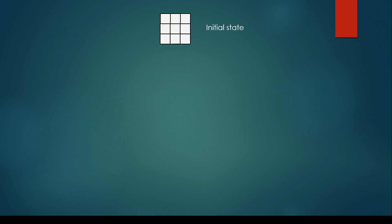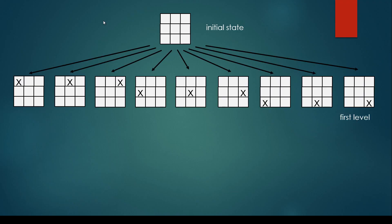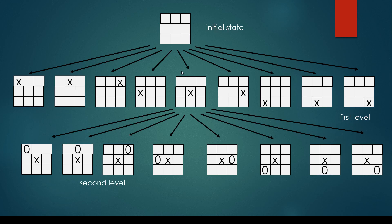For tic-tac-toe, we have the initial state: a 3x3 grid with 2 players denoted by X and O. At the beginning, the board is empty. We construct this tree-like structure on a layer-by-layer basis. The first player is able to place X in 9 different locations — this is the so-called first level. Then at the second level, if X is at one location, O can be placed in any of the remaining 8 positions. As you can see, this game tree can become enormous, but for tic-tac-toe we are able to construct the whole tree-like structure in memory.